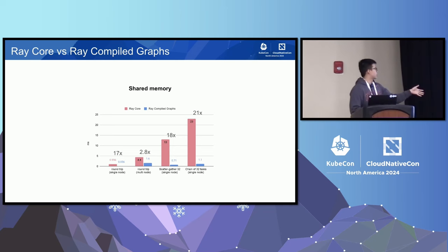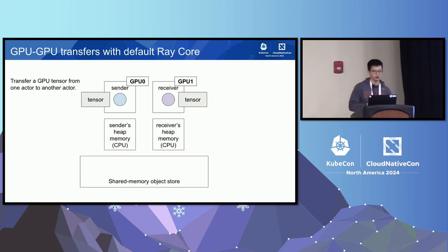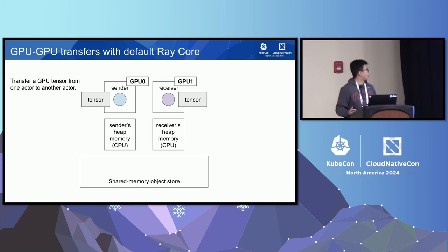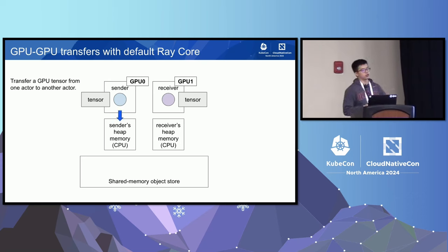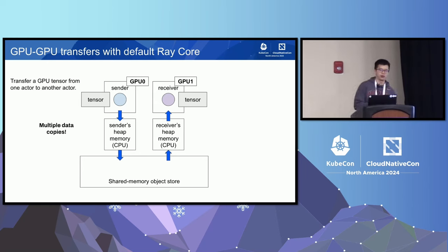The benchmark results show approximately 10 to 20x speedup across single-node and multi-node round-trip scenarios. For GPU communication: in default Ray execution, transferring a tensor between GPUs requires copying the tensor from GPU to the sender's CPU heap memory, serializing it into the object store shared memory, and then the receiver reads from shared memory and copies back to GPU — many data copies. Even with some optimizations, there is still significant serialization and deserialization overhead.